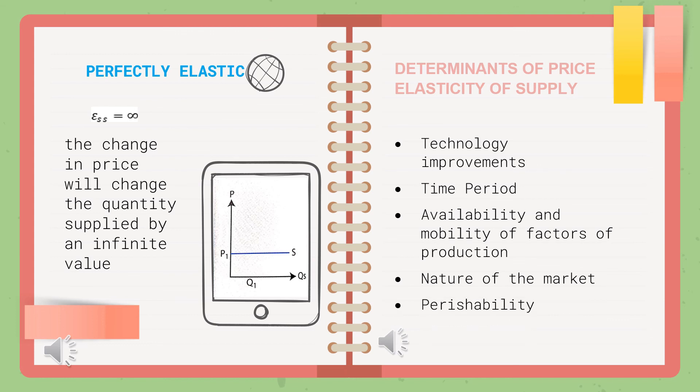The last determinant is perishability. Perishable goods such as milk and bread do not last long, making the quantity supplied inelastic. Whereas for non-perishable goods, the quantity supplied is elastic because suppliers can produce more supplies as the goods last for a long time.